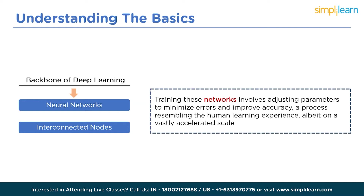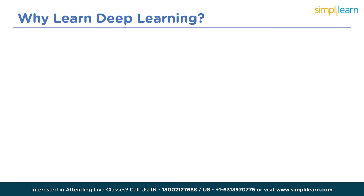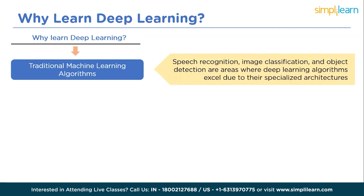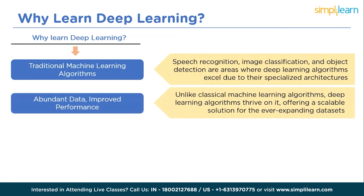Now we'll see why we should learn deep learning. It's a game-changer in various aspects, offering state-of-the-art performance, scalability with data, reduced feature engineering, and transferability across tasks. Deep learning shines where traditional machine learning algorithms struggle — speech recognition, image classification, and object detection are areas where deep learning algorithms like CNNs (Convolutional Neural Networks) and Recurrent Neural Networks excel due to their specialized architectures. Moreover, as data becomes abundant, deep learning's performance continues to improve, unlike classical machine learning algorithms which plateau.